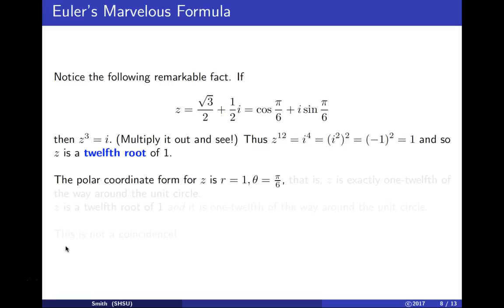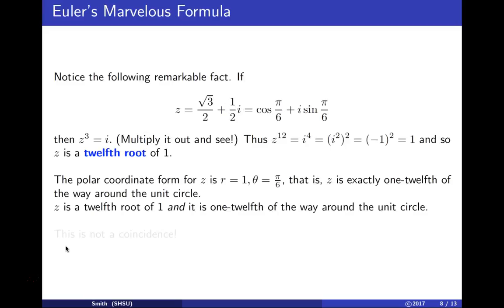This is easy to see using Euler's formula. The polar form for this point is r = 1 (modulus 1) and θ = π/6 (30 degrees). This element z is exactly 1/12th of the way around the unit circle. z is a 12th root of 1 and is geometrically 1/12th around the unit circle.